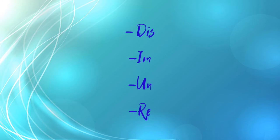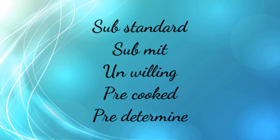The four most common prefixes are: dis, in, re, and un. For example: 'substandard' — where 'standard' is the root and 'sub' is the prefix — 'submit,' 'unwilling,' 'pre-cooked,' 'pre-determined.' The four most common suffixes are: -ed, -ing, -ly, and -es. Examples include: hopefully, happiness, wonderful, dependent, action.